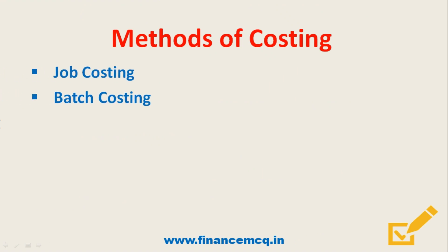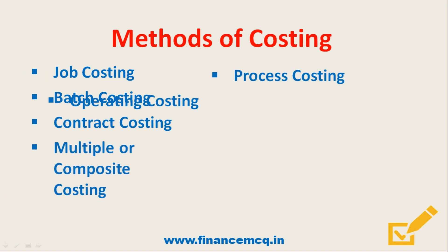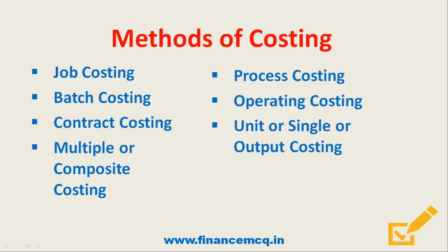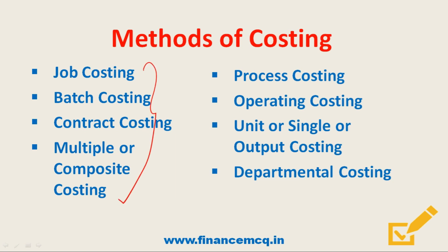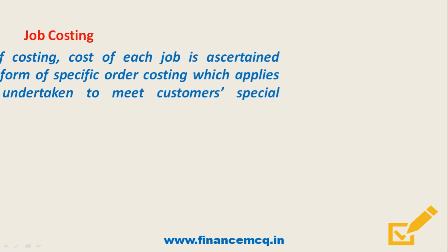Today we will see various methods of costing such as job costing, batch costing, contract costing, multiple or composite costing. Then we will see process costing, operating costing, unit or single or output costing, and departmental costing. The first category of methods are types of specific order costing, while the remaining four are types of operation costing.